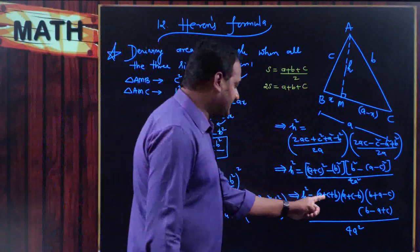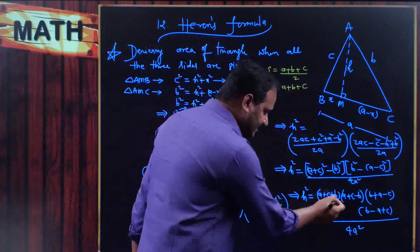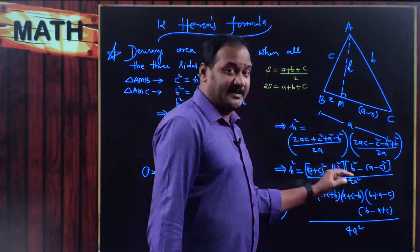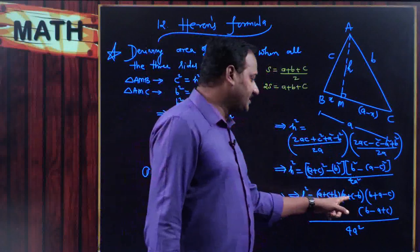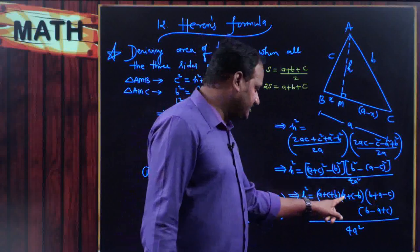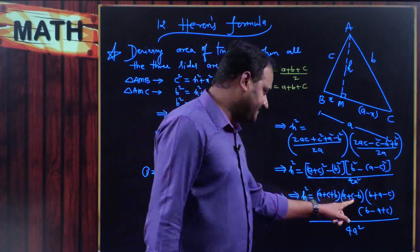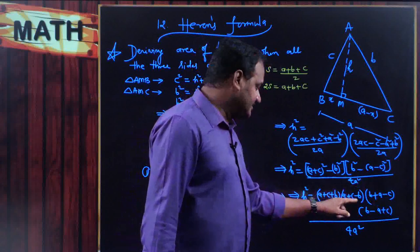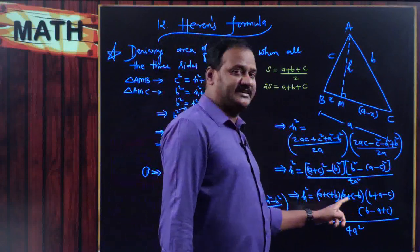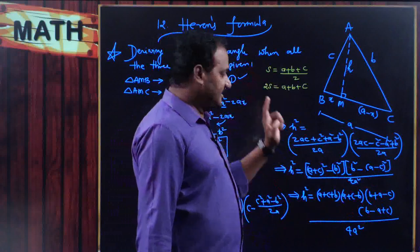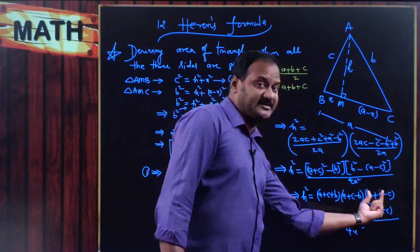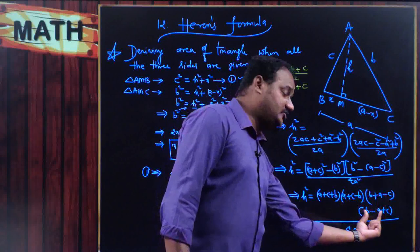For the other terms: (a + c − b) = (a + b + c) − 2b = 2S − 2b. Similarly, (a + b − c) = 2S − 2c, and (b + a − c) — wait, the remaining term is (b − a + c) = 2S − 2a. So h² = 2S × (2S − 2b) × (2S − 2c) × (2S − 2a) divided by 4a².